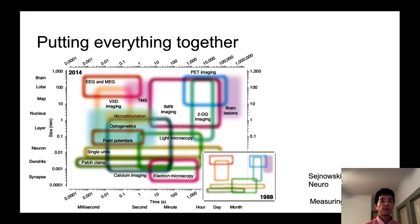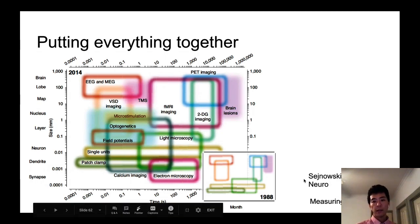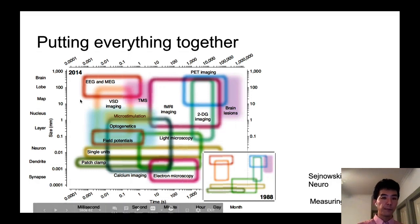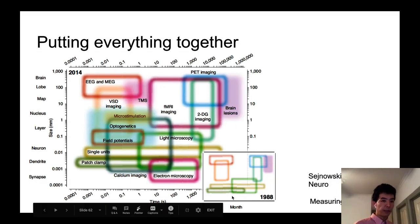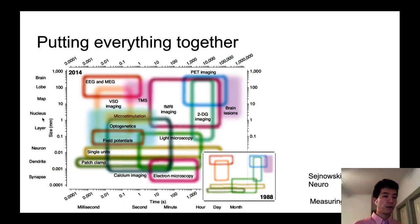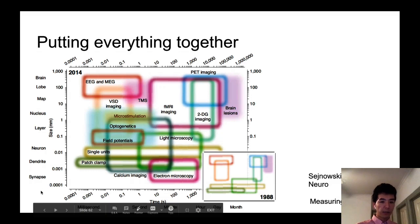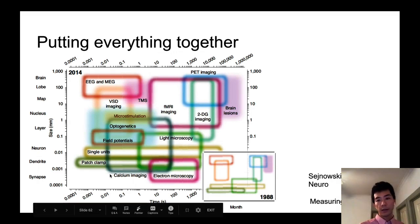This is a nice figure that puts all the methods that neuroscientists use nowadays into one graph. This was generated by Terry Sejnowski from UCSD, and he generated the same kind of thing in 1988 and then regenerated in 2014. As you can see, fMRI emerged over the last 30 years. The y-axis of this graph is spatial resolution, going from brain to globe and then the maps and the nucleus, neurons, layer, dendrites, synapses and so on. And x-axis is time going from months to milliseconds and seconds.